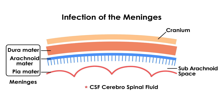The CSF can tell you a lot of important diagnostic clues, including what type of bacteria is infecting the patient. This is because the bacteria reach the meninges and the subarachnoid space, causing the infection.